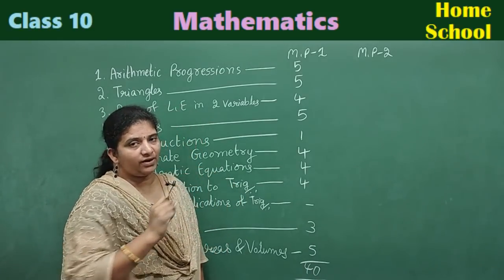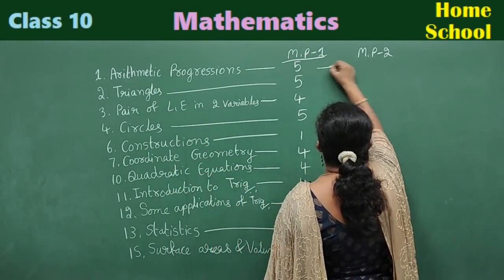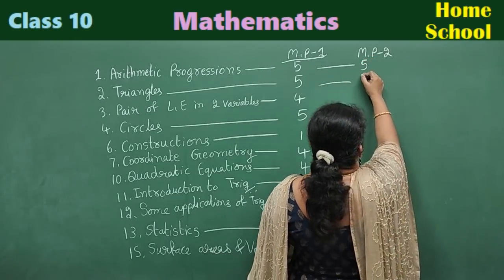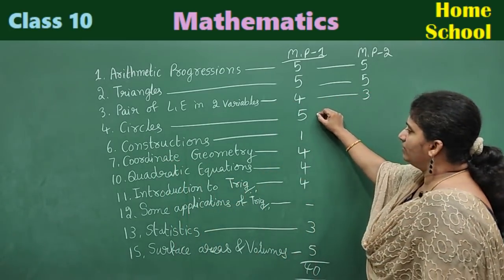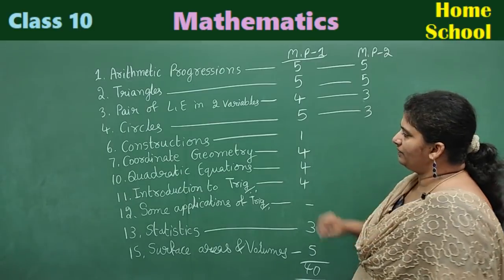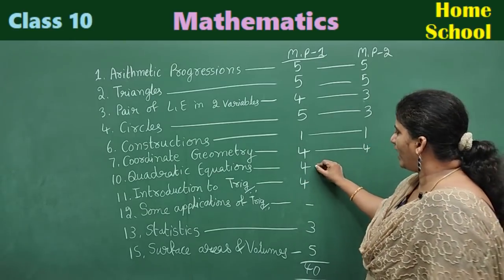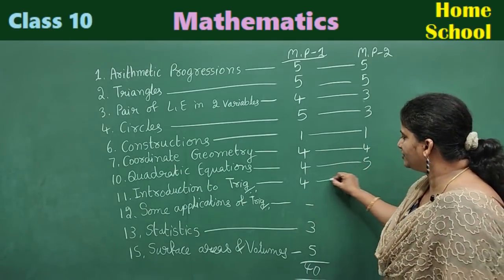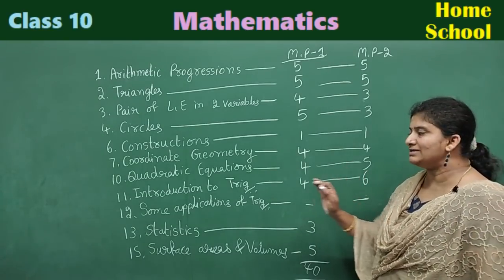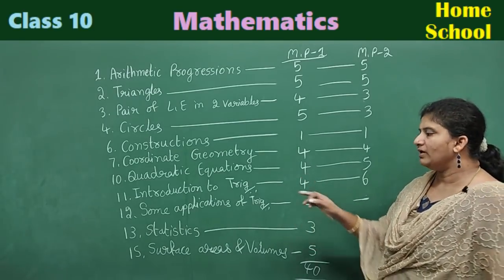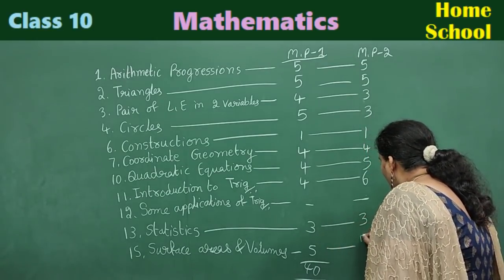In model paper two, the questions from each chapter were: Arithmetic Progressions — 5, Triangles — 5, Pair of Linear Equations — 3, Circles — 3, Constructions — 1, Coordinate Geometry — 4, Quadratic Equations — 5, Introduction to Trigonometry — 6 questions. In this model paper also, there was no question from Some Applications of Trigonometry. Statistics — 3, Surface Areas and Volumes — 5.